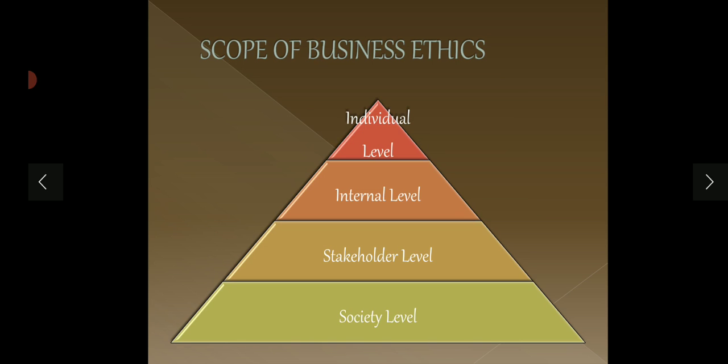You can say that at the individual level your organization is very good, at the internal level your policies are very employee-friendly, and you pay attention to stakeholders. But if you are involved in a type of business that is not right for society, that means your scope is only at the stakeholder level — you are not following business ethics at the society level. These are the scope of business ethics.